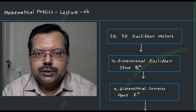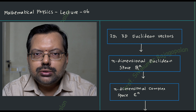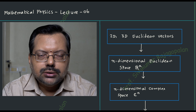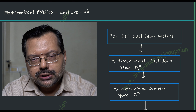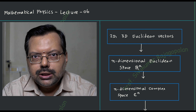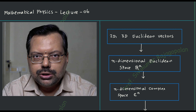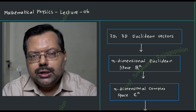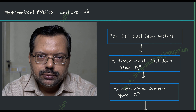Suppose if a vector space does not have the ability to define an inner product, then such vector spaces will not be called by the name inner product space. So the terminology should be clear to you: inner product space is the name that you are going to give, provided that we have the possibility of defining a quantity called inner product.